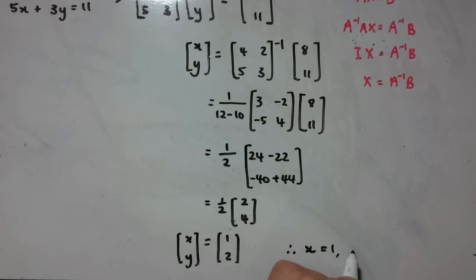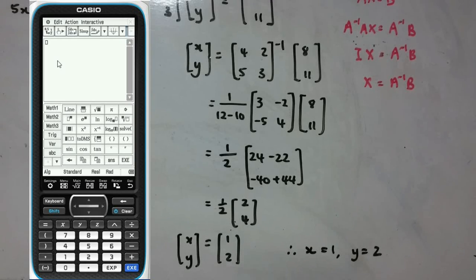So let's just quickly check on the CAS that we've done everything correctly. Remember we want to find the inverse of this matrix, 4, 2, 5, 3, inverse, so to the power of negative 1, times that right hand side, which is 8, 11. And we get that x is 1, y is 2.